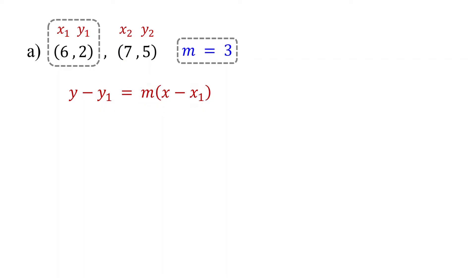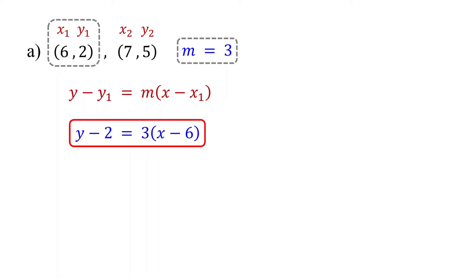Now substitute the slope and the chosen point into the point-slope form. Replace y1 with 2, m with 3, and x1 with 6. This is the equation of the line in point-slope form.